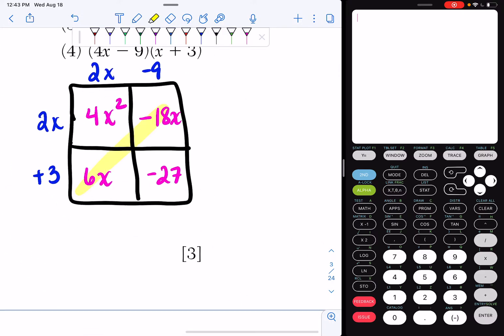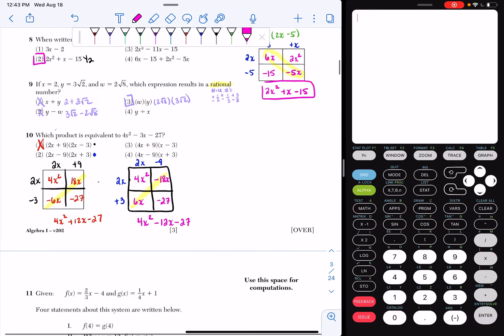So now when I combine my like terms on my diagonal, I'm going to get 4x squared. Negative 18x plus 6x is a minus 12x. And then I get my minus 27. So if I look, I still want a minus 3x. So it can't be choice 2.